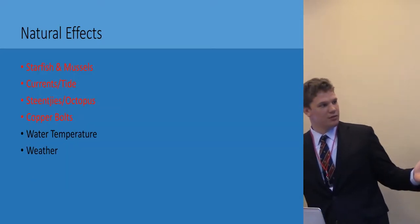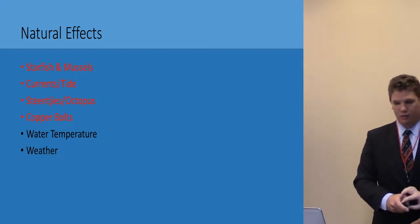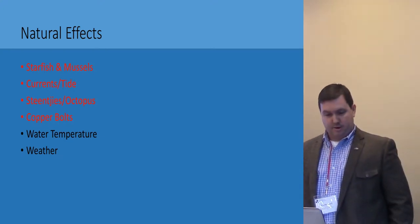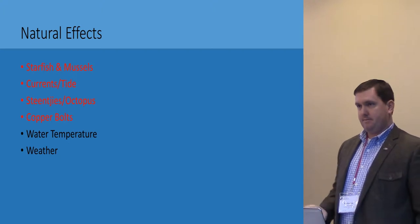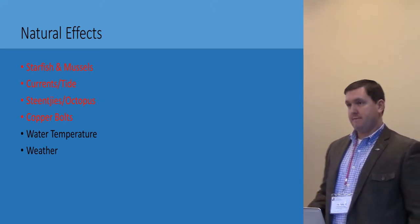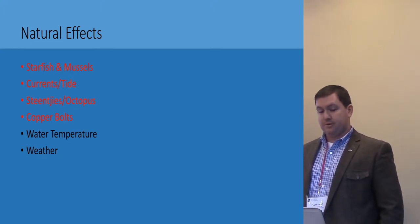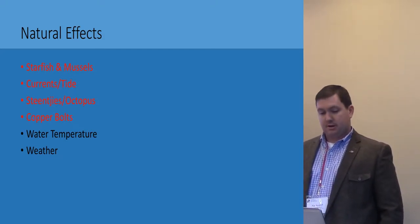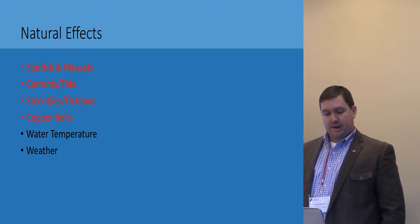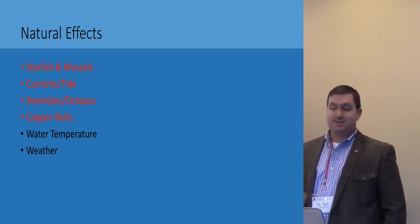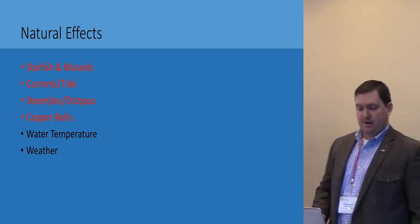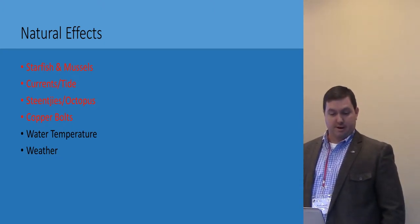Nathan King is going to cover natural effects. On the wreck of Brunswick, we have various natural effects that are occurring. We have a predator-prey cycle going on with starfish and mussels. We have current and tide activity that's covering and uncovering the wreck. And we have the stingrays — it's a Dutch word — and octopuses that are also causing some issues on the wreck.